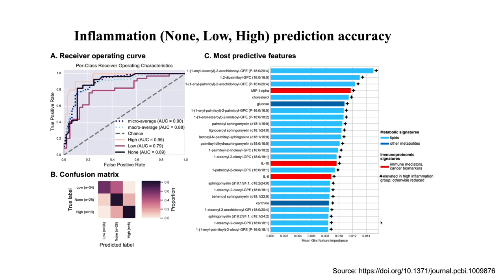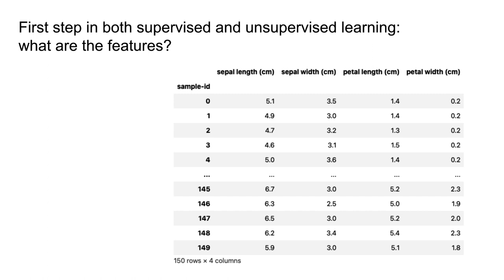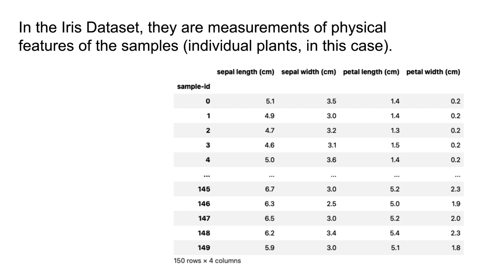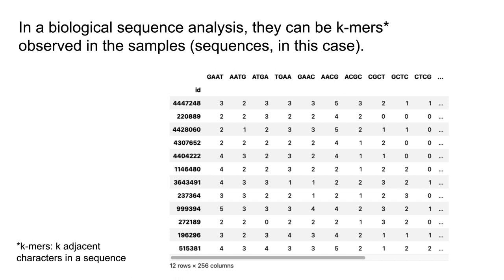Those are just a couple of examples of how supervised learning is used in bioinformatics and microbiome research. The first step in either supervised or unsupervised learning analysis, after collecting samples, is defining what the features are. In the iris dataset, features are physical features of the plants — things like sepal length and petal length — for the 150 different samples in that dataset.